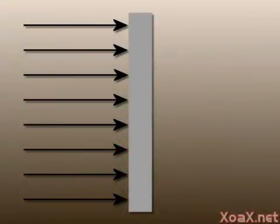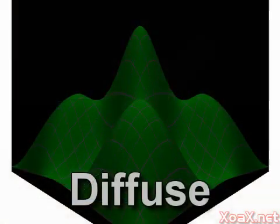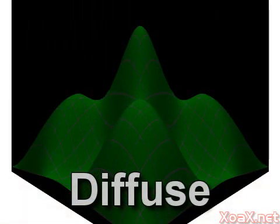To explain this phenomenon, consider this wall which is being illuminated by light rays. The light rays are represented by arrows. As the wall turns, fewer rays hit the surface, so the light reflection is dimmer. Here's how the diffuse term looks by itself.